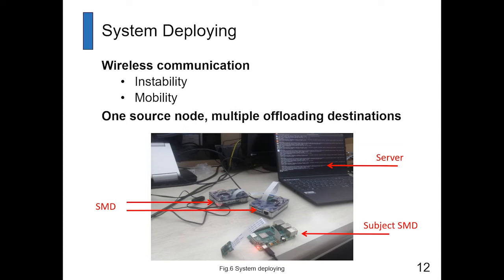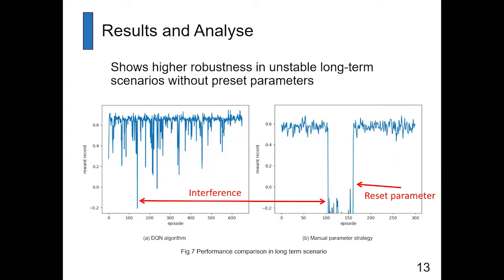Our system deployment has three SMDs and one server running Ubuntu. The three SMDs are Raspberry Pi devices. A subject SMD uses the YOLO algorithm to do object detection, then uploads the results to the server. The subject SMD will find the best offloading way — either to the AP or to another SMD — determined by the DQL network.